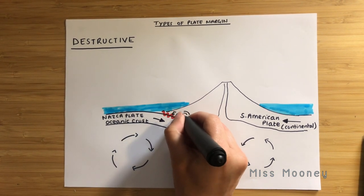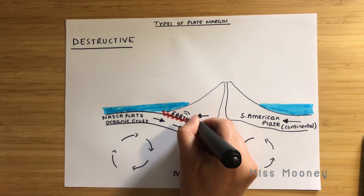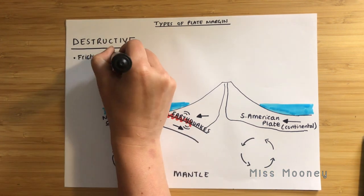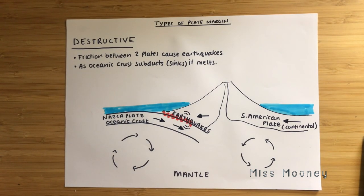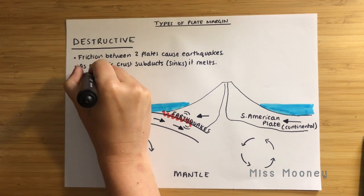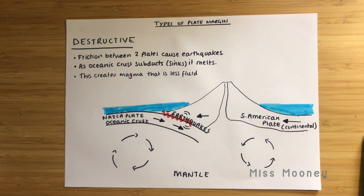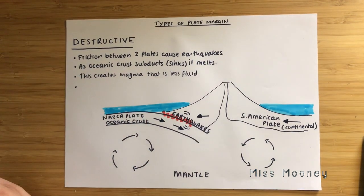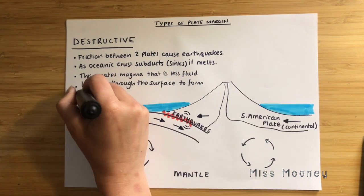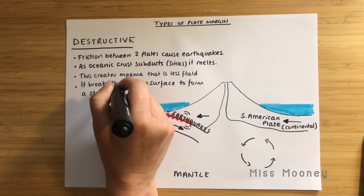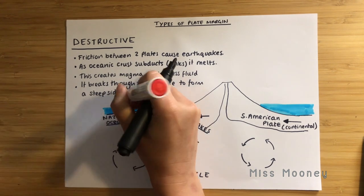Due to the plate movement, friction and energy being built up, earthquakes occur at the destructive plate margin when the plates eventually slip past each other, releasing the seismic energy. As the oceanic crust sinks, friction, increasing pressure, and heat from the mantle melt and destroy the oceanic plate. This creates magma that is less fluid than the magma in the mantle. The pressure of the magma builds up underneath the Earth's surface, and some of the molten rock works its way up through the continental crust through fissures and cracks, forming magma chambers — pockets of magma in the continental crust.